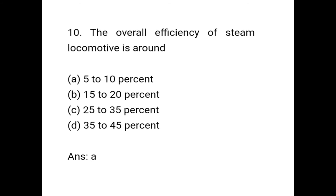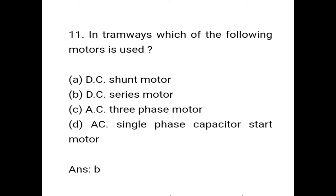Question 10: The overall efficiency of steam locomotive is around 5 to 10%. Question 11: In tram way, which of the following motor is used? The correct answer is option B: DC series motor. In tram ways, DC series motor is used.